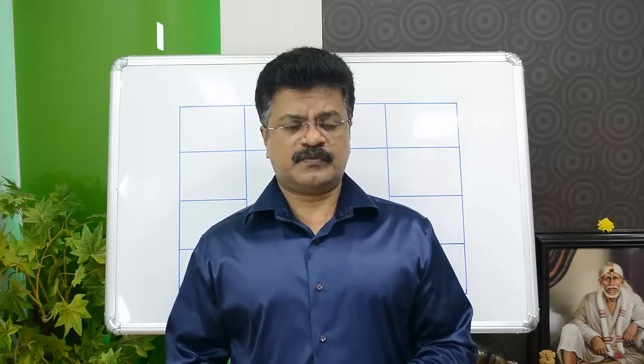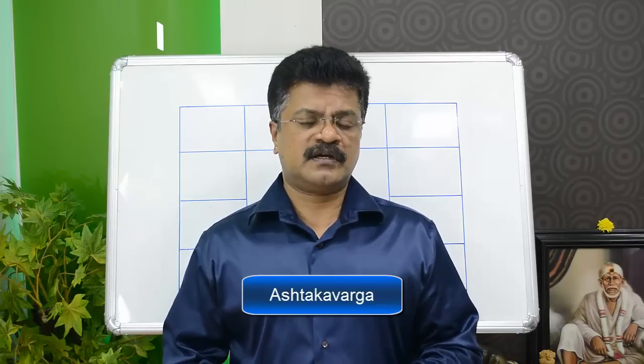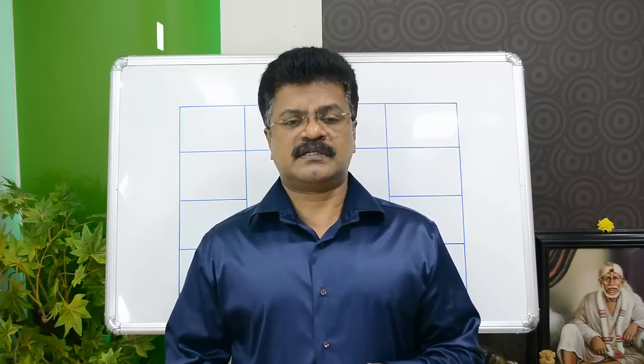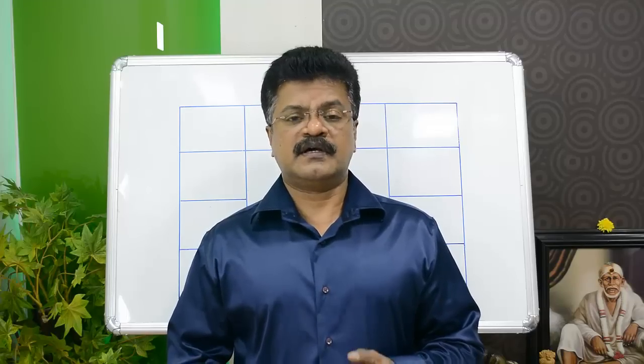Hello, welcome back to another lesson in Vedic Astrology. In your computer horoscope, have you seen charts with lots of numbers in them? These number charts are called Ashtaka Varga because it has got something to do with 8 — it's an 8-point calculation. That's why it's called Ashtaka Varga, because Ashtaka means 8. It involves the 7 planets along with the Lagna.